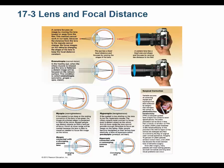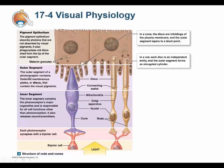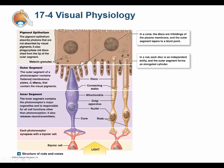Emetropia means normal vision. Myopia is nearsightedness, hyperopia is farsightedness, and presbyopia is age-related farsightedness. One difference between our eyes and a camera: a camera changes where the lens is physically located to focus; we change the shape of the lens instead. I'm going to stop here and make a separate mini-lecture for 17-4, since I talked more than planned on the anatomy.